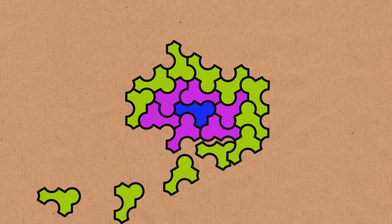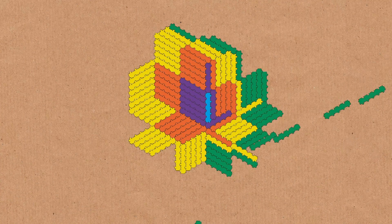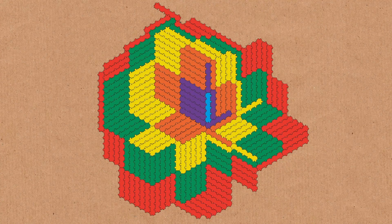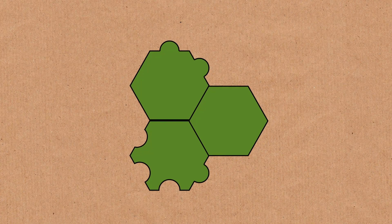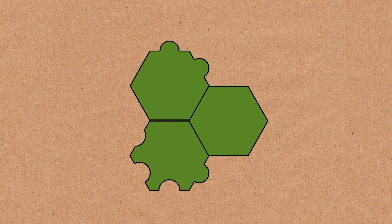Both of the two examples from Casey Mann — the one with Heesch number three and the one with Heesch number five — are both part of a more general study that he did, looking at what you could do with polyhexes, where you stick together hexagons and then make some markings on the side. It might be that you could get some rich structure from that — you could then get a result where you say, I can do every even number up to 50, and then that might be a more interesting result.